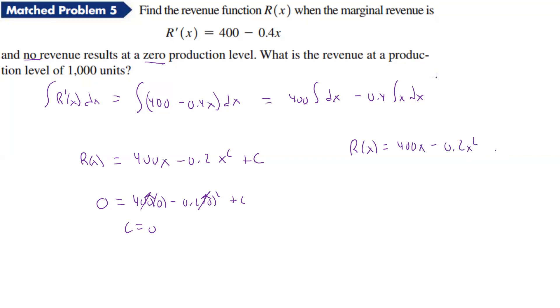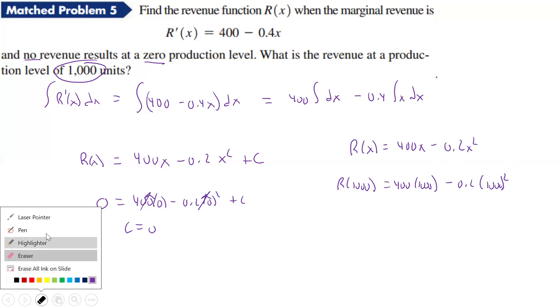There really isn't a c in this case, and so now we can just plug in 1,000 for our production level of x, and so we can say r of 1,000 equals 400 times 1,000 minus 0.2 times 1,000 squared. Maybe we should get rid of that little extra zero there.